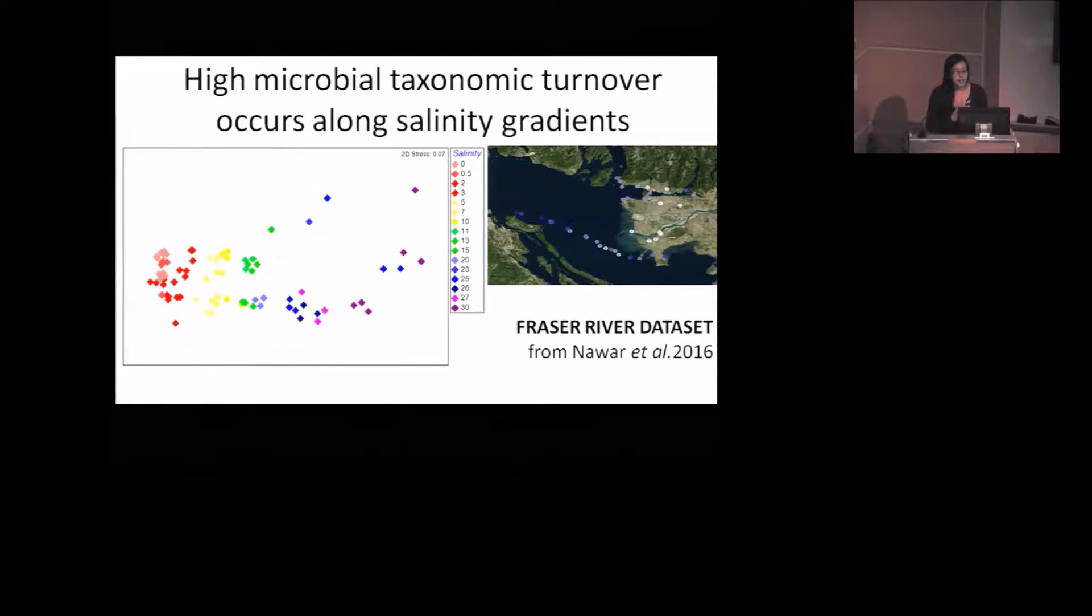This plot is an NMDS ordination, which shows you how different or similar communities are. Each dot is a single community or water sample. The closer two dots are to each other, the more similar they are. When she colored it by salinity, there's this very lovely gradient where freshwater communities are all quite similar, marine communities are quite similar, and the fresh and marine communities are different from each other. So we see this beautiful turnover that occurs in microbial communities along salinity gradients.